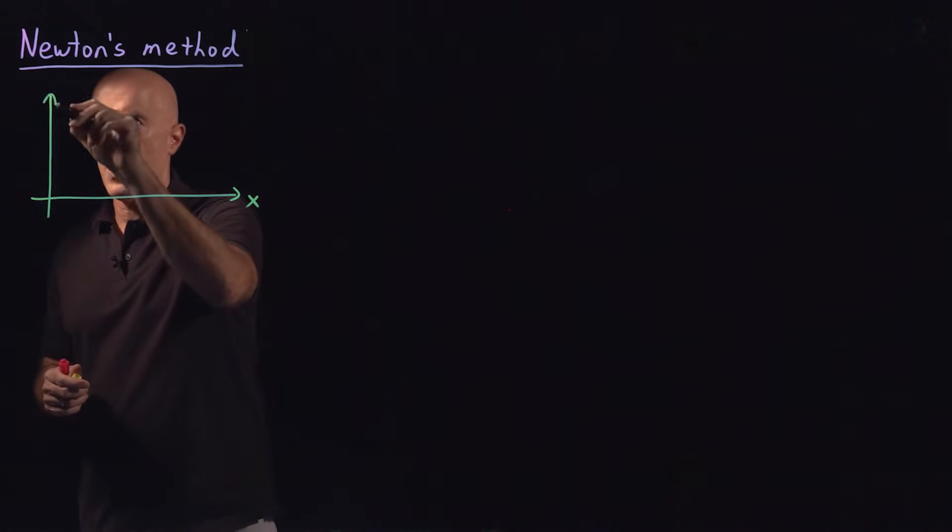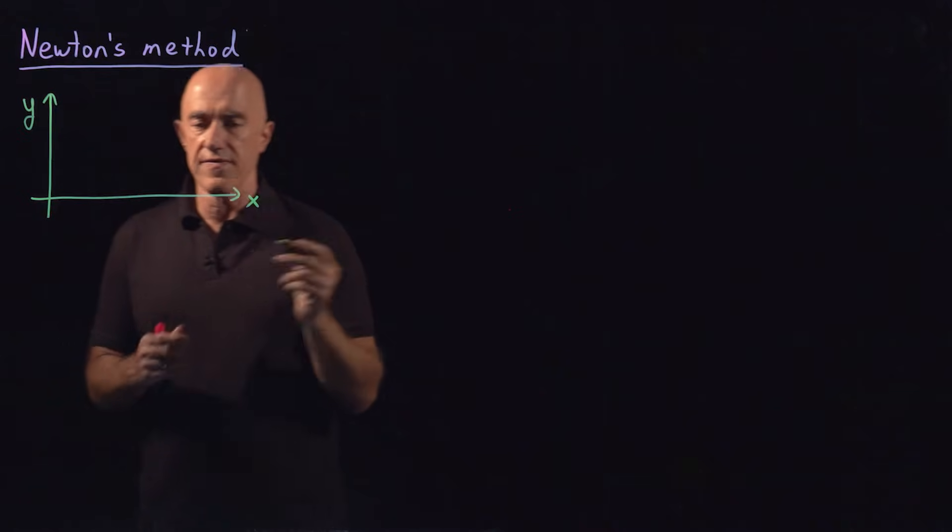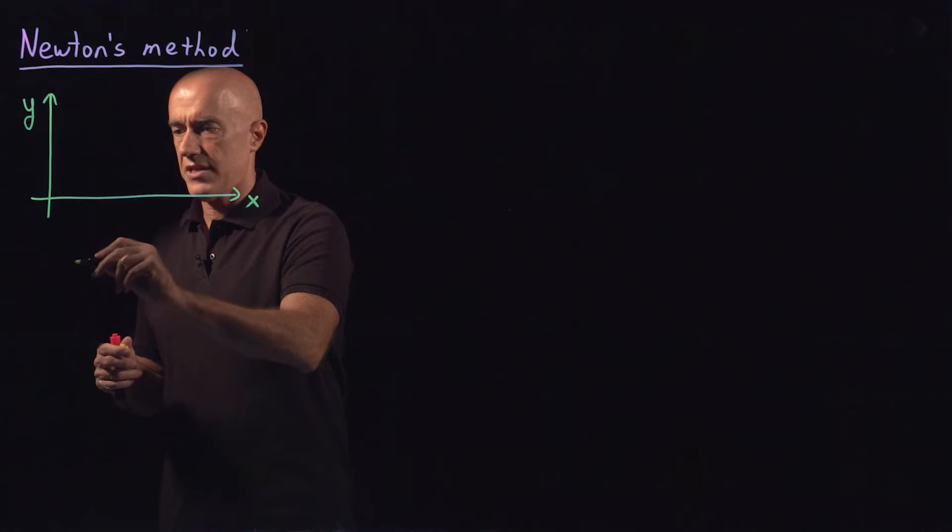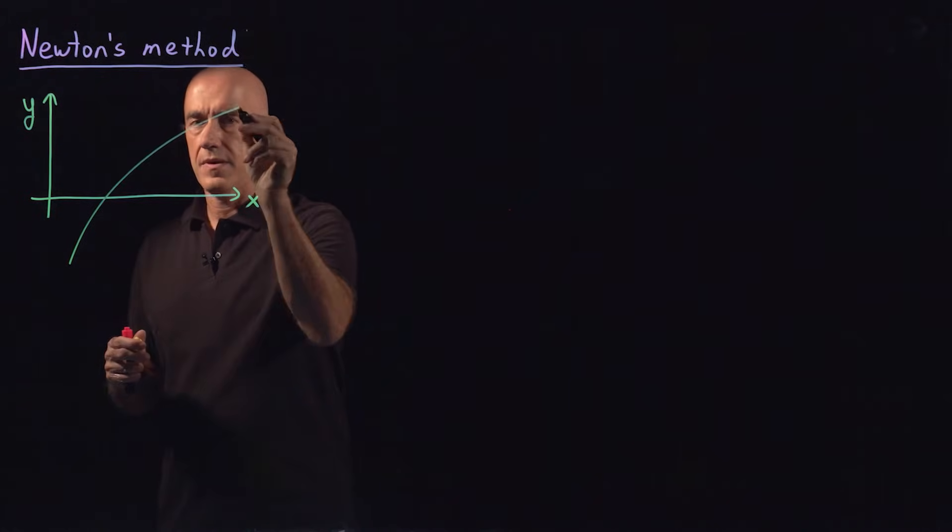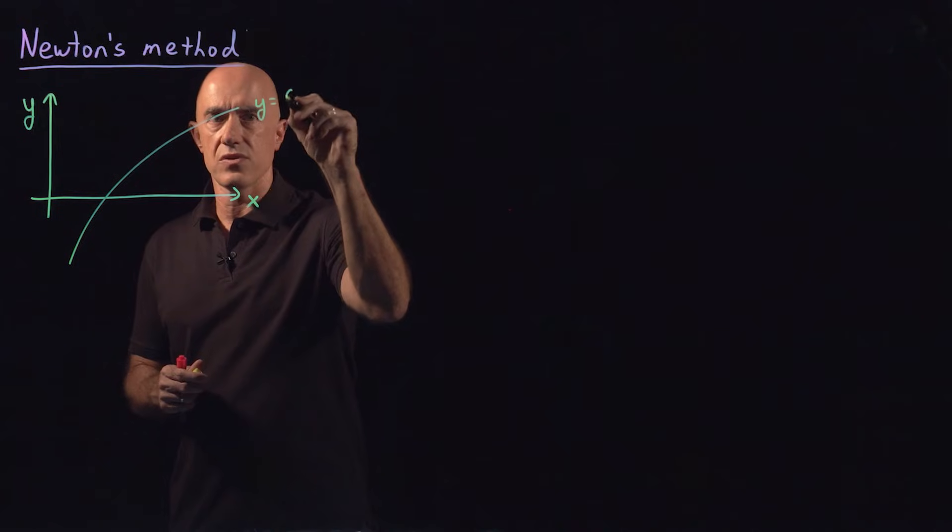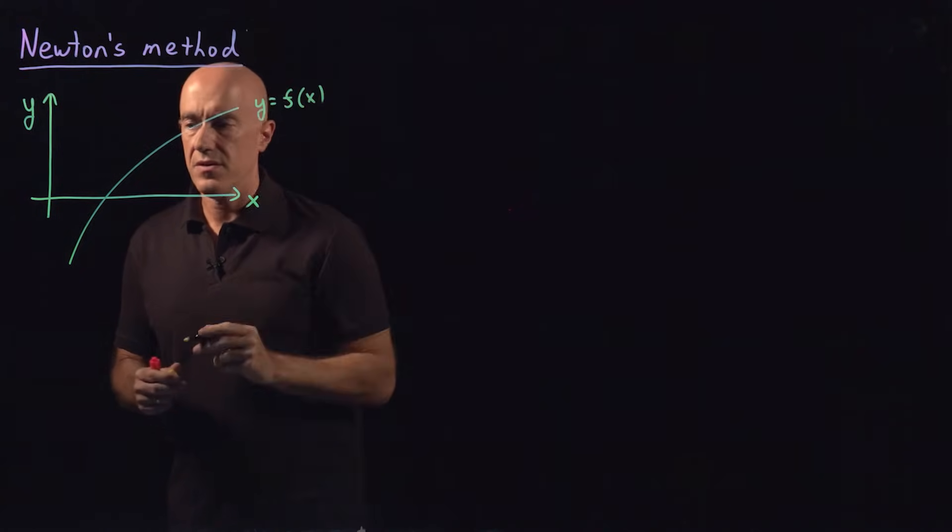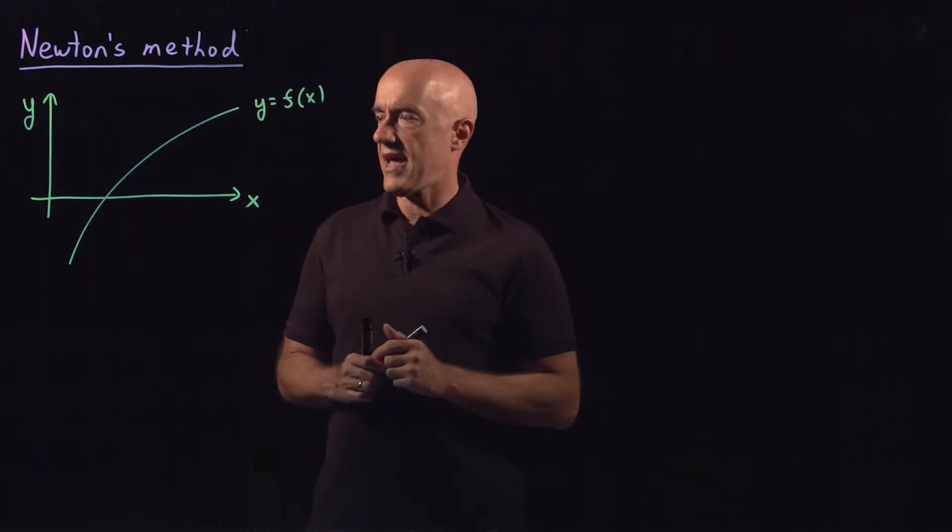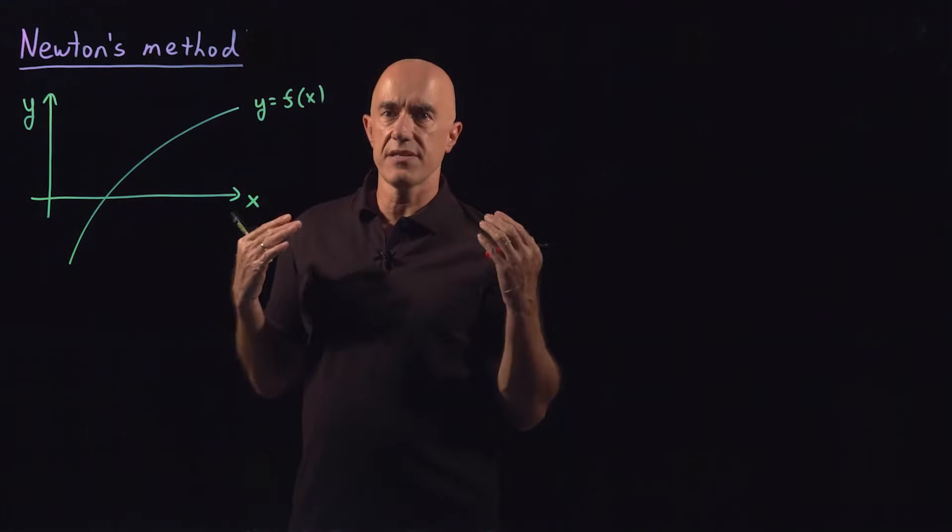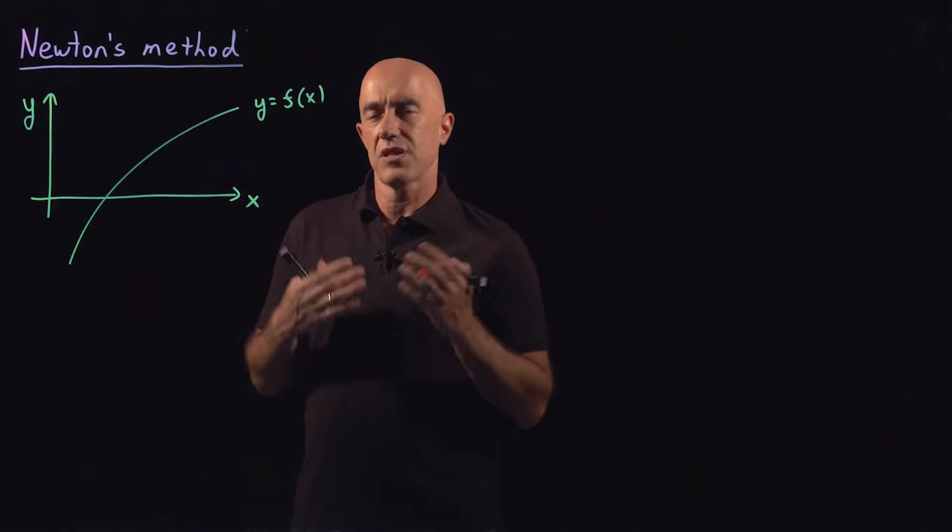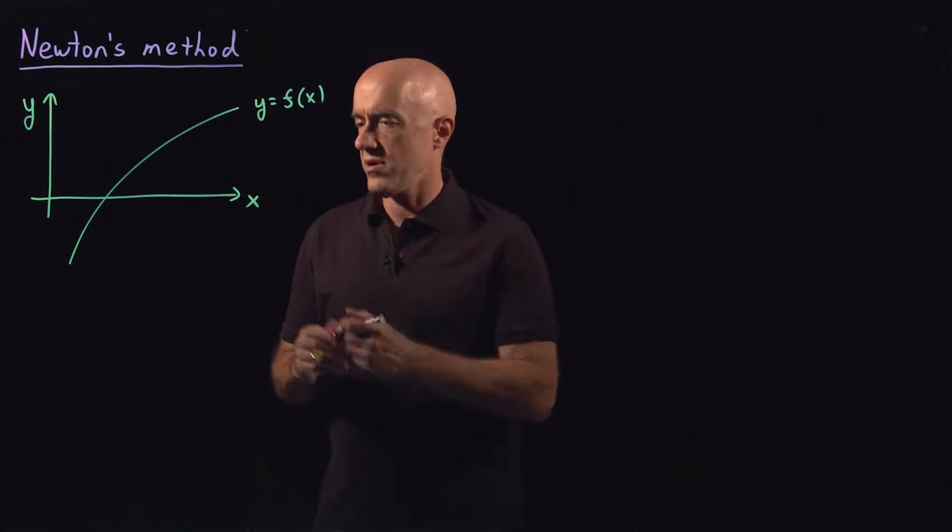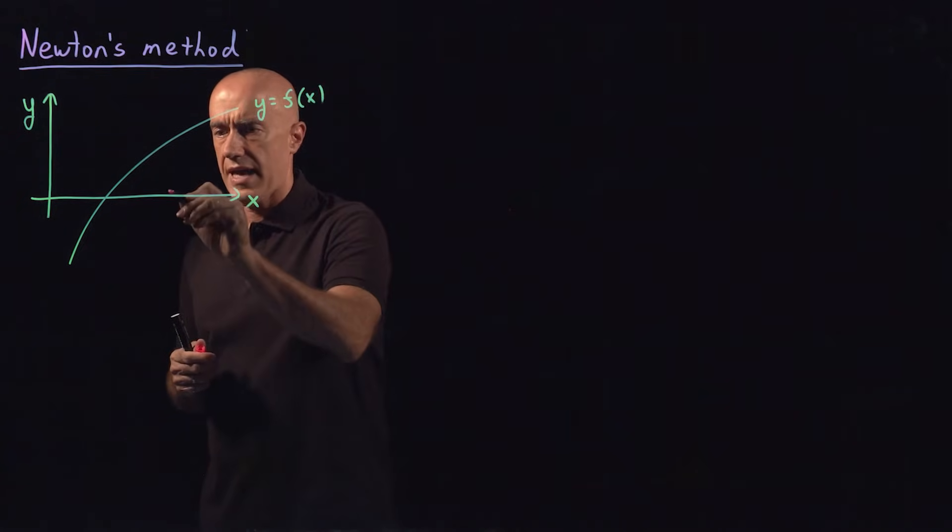This is our xy axis. We're trying to find the root of y equals f of x. Let's draw the function here. So say this is y equals f of x. The root is the intersection with the x axis. This is an iteration method. So let's say that we've already iterated n times, so we're at the value of x_n. So let's say this is x_n.